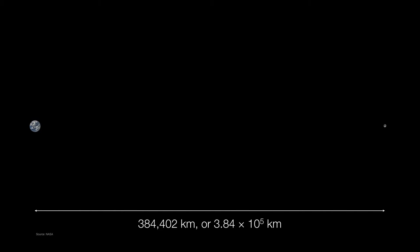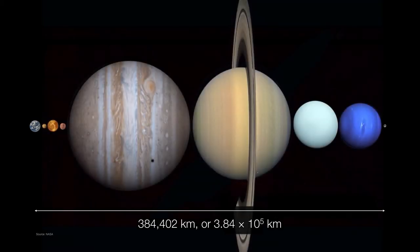And as you can see, the Earth and moon are pretty far apart from one another. There's enough room to easily fit all of the major planets of the solar system.